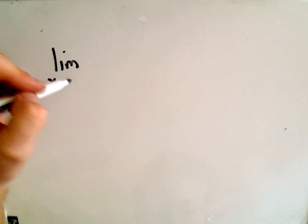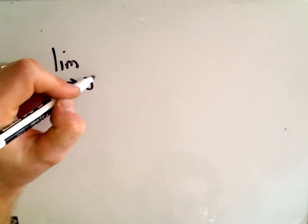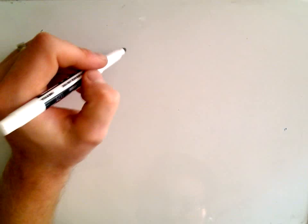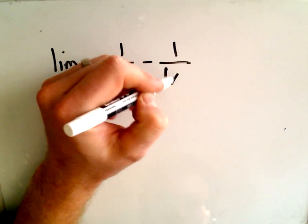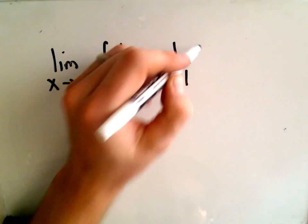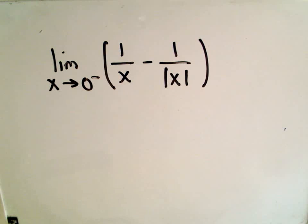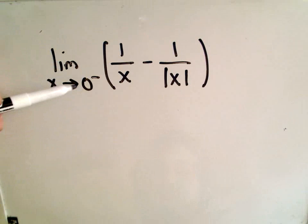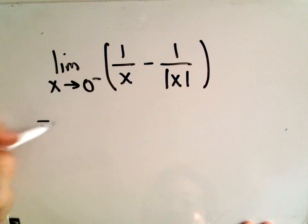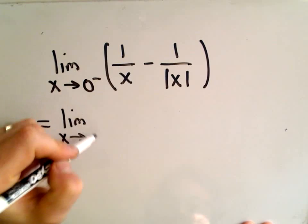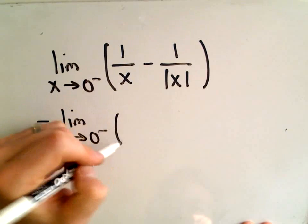Let me do one more quick one. Suppose we want to calculate the limit as x approaches 0 from the left of 1 over x minus 1 over the absolute value of x. Plugging in x equals 0 gives 1 over 0, which doesn't work. The key to this problem is getting rid of the absolute value in the appropriate manner.